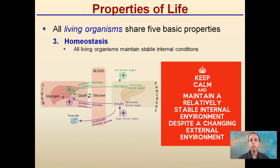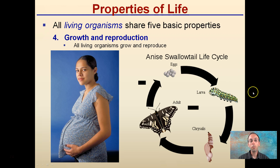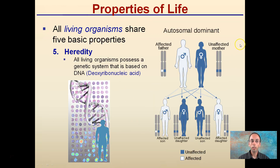The fourth property is that all living organisms can grow and reproduce. Whether it's a human or an insect, organisms are able to grow and reproduce. Even though the life cycles of each individual may be different, that cycle does occur.